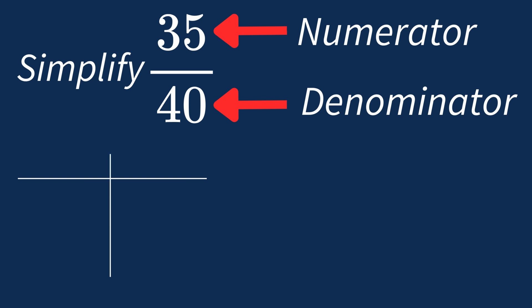First, let's list out the factors for each. For 35, the factors are 1, 5, 7, and 35. For 40, the factors are 1, 2, 4, 5, 8, 10, 20, and 40.